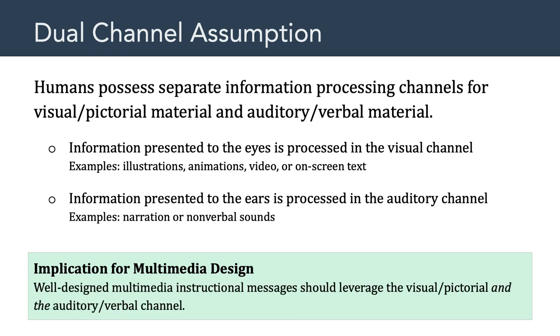This means that information presented to the eyes is processed in a visual channel. And we can contrast that with information presented to the ears, which is processed in an auditory channel. Now, the implication of the dual-channel assumption for multimedia design is pretty simple. Well-designed multimedia instructional messages should leverage the auditory-verbal channel and the visual-pictorial channel. And in the Space Shuttle example we looked at for Critical Reflection 1, we saw an example of that, where there was both audio and visual information for the learner to process.